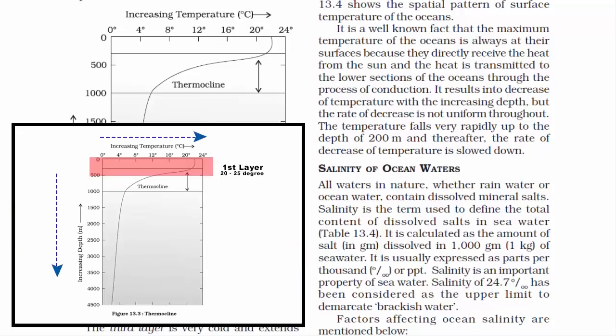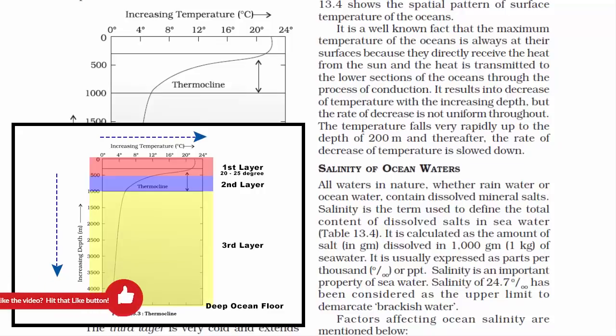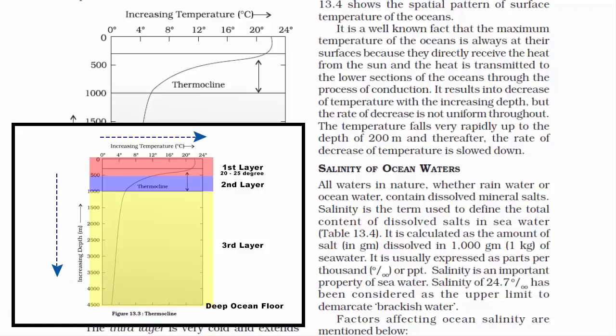The second layer of ocean water is called the thermocline layer. It is 500 to 1000 meters thick, and in this layer there is a rapid decrease in temperature with increasing depth — temperature drops drastically from 500 to about 1000 meters. The third layer extends beyond 1000 meters down to the deep ocean floor. These are the three layers of ocean water from surface to bottom.